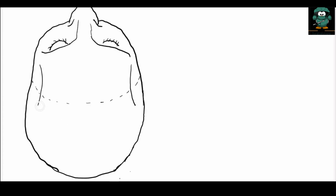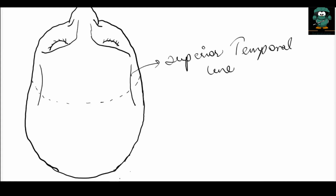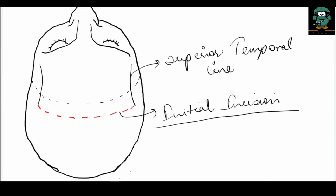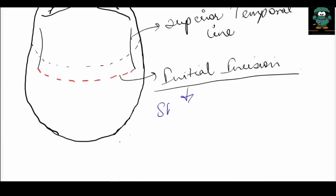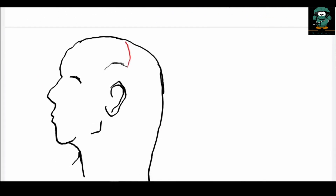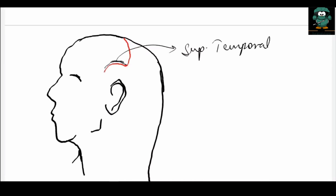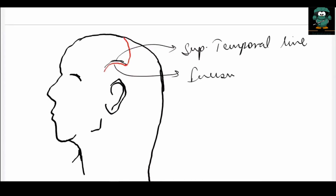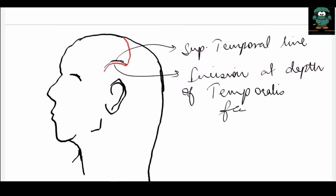The initial incision is made on the vertex, extending from one superior temporal line to the other on either side. This first portion of the incision is placed through the skin, subcutaneous tissue, and the galea. From the lateral aspect, below the superior temporal line, the incision extends on the temporalis fascia, or up till the level of the temporalis fascia.